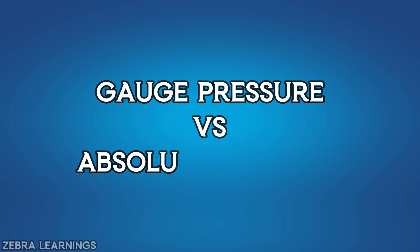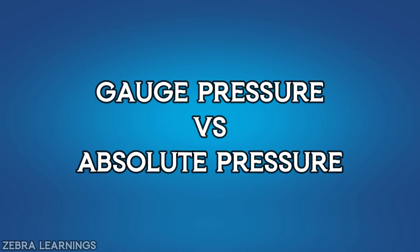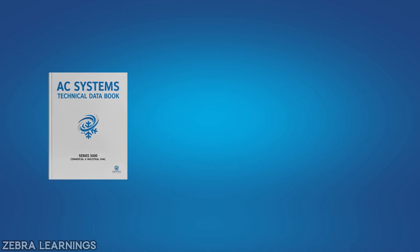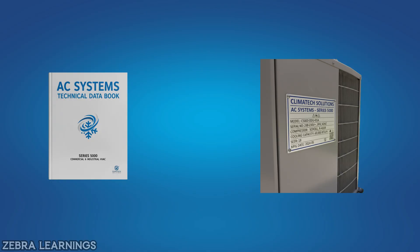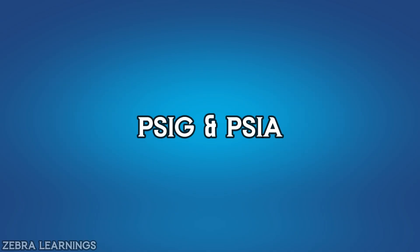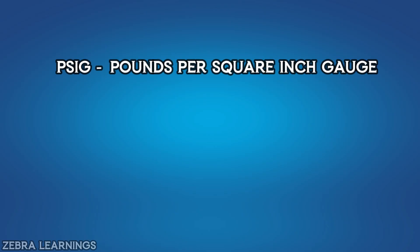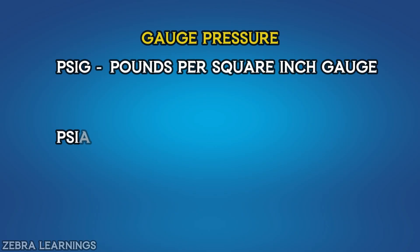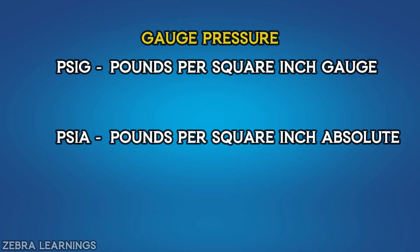In this video, we are going to understand the difference between gauge pressure and absolute pressure. If you look at your AC unit's data book, or sometimes even inside the unit, you'll see two pressure readings: PSIG and PSIA. PSIG means pounds per square inch gauge — that's the gauge pressure. PSIA means pounds per square inch absolute — that's the absolute pressure.